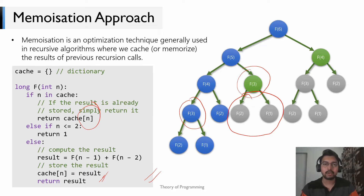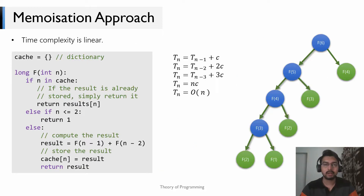By using memoization we've cut down the recursion tree by a great deal. So how fast is this algorithm? Its time complexity is linear. Every right child — representing the second recursive call — takes only constant time because its result is already known. Note that F(1) and F(2) also take constant time as they are the base cases.